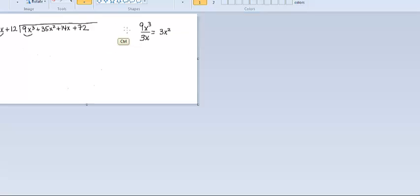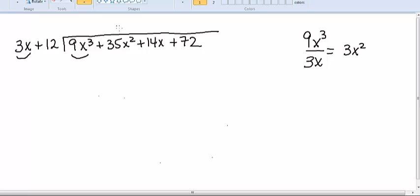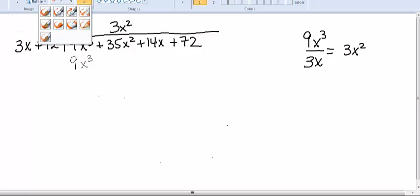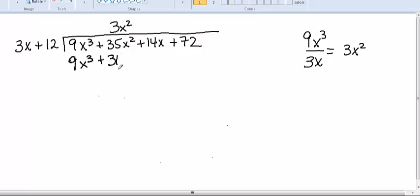Now, I like to line up my degrees of my variables. So what I mean by that is, I'm going to write the 3x squared right above the 35x squared. The next step is always going to be to multiply the term that you just found times each of the terms in the 3x plus 12 on the outside. So 3x squared times 3x is going to be 9x cubed. But we also have to multiply 3x squared by 12. So that's going to give us positive 36x squared.